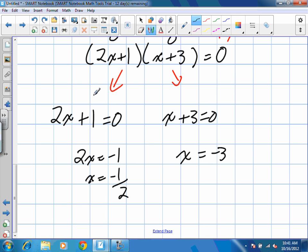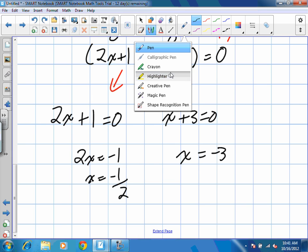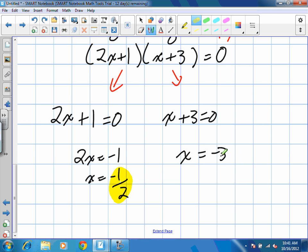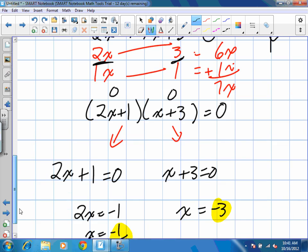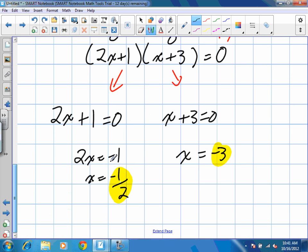So, the possible answers to this question, and we can check these if we want, are negative 1 half and negative 3. So, we'll jump up to the beginning here. 1 over 2, 1 half, because we had brought the 1 over and then we had to divide by 2. At the bottom, see how this was 2x equals negative 1? To bring the 2 over, we have to divide both sides by 2.